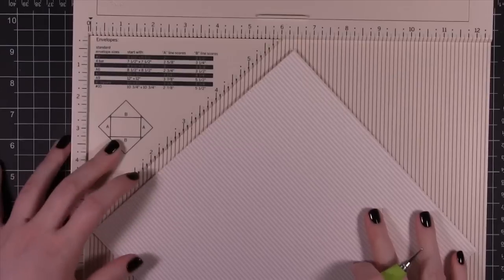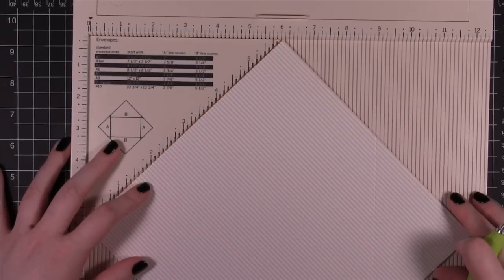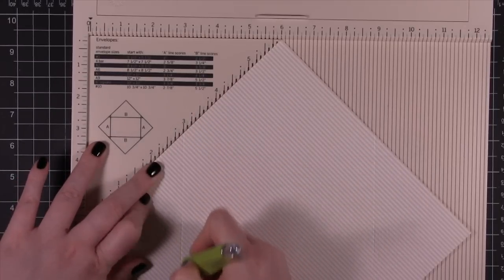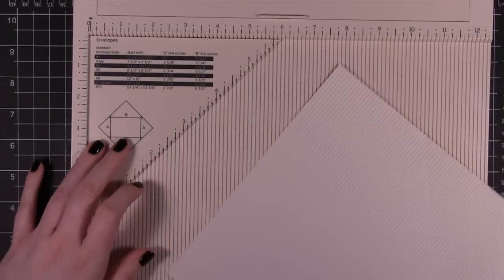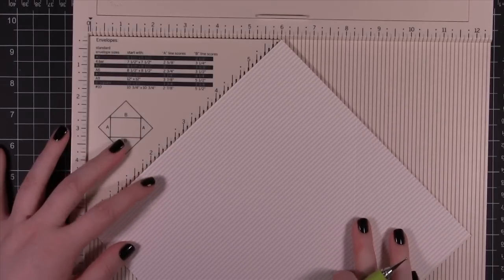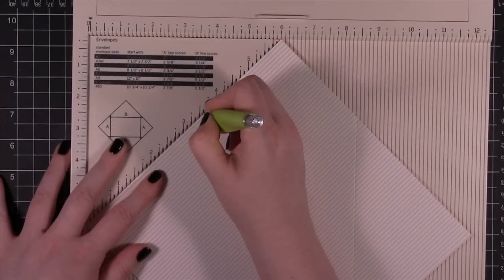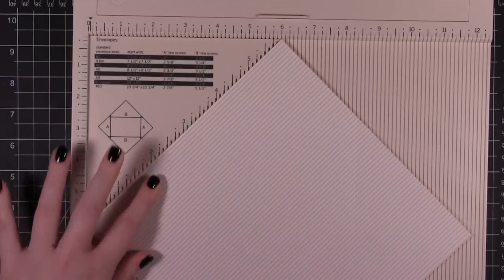And I'll turn again. Now I'm going to do another A line, which is at 3 right here. And then I'll do the last turn and the last one will be a B line, which is at 3 and 5 eighths again.